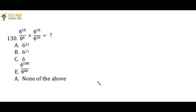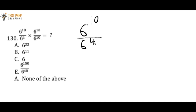There are two key exponent rules to know for this question. Whenever you have a situation like six to the 10 divided by six to the 4 — these both have the same base; the six is the base, the 10 is the exponent — all you have to do is subtract the exponents: 10 minus 4. So I can rewrite this as six to the power of 6. The same applies to six to the 15 over six to the 10 — both have six as their base, so I just do 15 minus 10, which is 5.